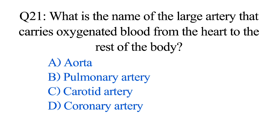Question number twenty-one. What is the name of the large artery that carries oxygenated blood from the heart to the rest of the body? Option A: Aorta. B: Pulmonary arteries. C: Carotid arteries. D: Coronary arteries. The correct option is Option A: Aorta.